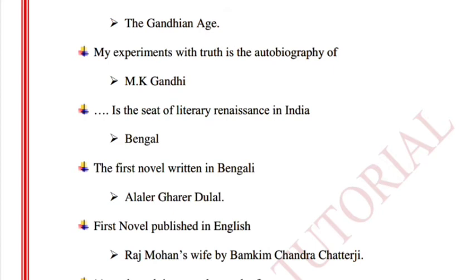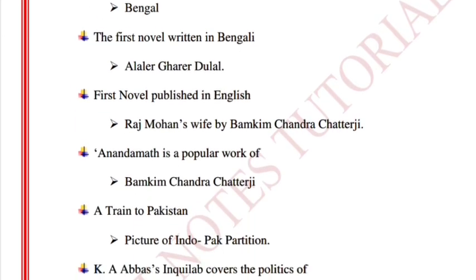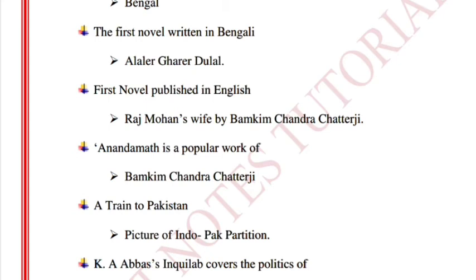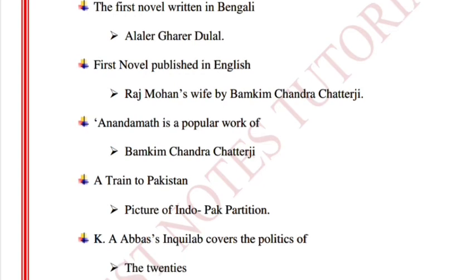Bengal is the seat of the literary renaissance in India. The first novel written in Bengali is 'Alalar Gharer Dulal.' The first novel published in English is 'Raj Mohan's Wife' by Bankim Chandra Chatterjee. 'Anand Math' is a popular work of Bankim Chandra Chatterjee.